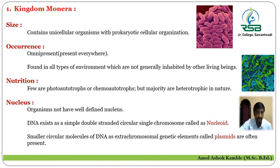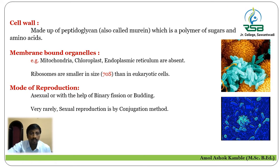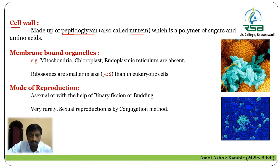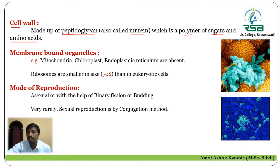Let us discuss the remaining characteristics of this kingdom — about its cell wall. The cell wall of organisms in Kingdom Monera is made up of peptidoglycan, also called murein. Peptidoglycan is a polymer of sugar and amino acids. That is the nature of the cell wall in Kingdom Monera.